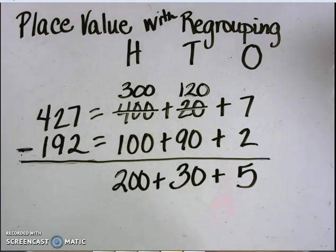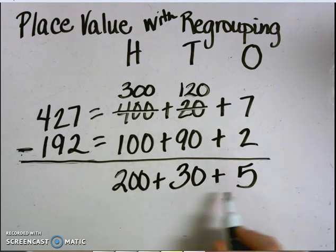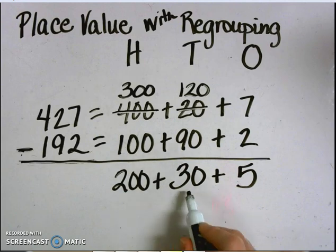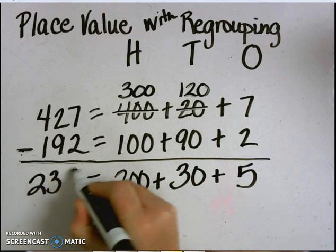Now that I've subtracted by place value, I need to put each of the place values back together. 200 plus 30 plus 5 equals 235.